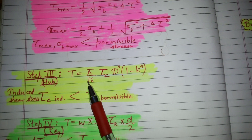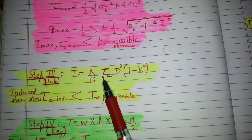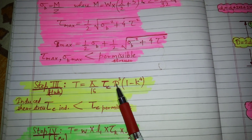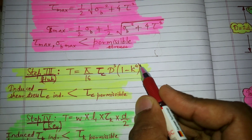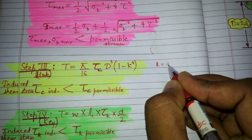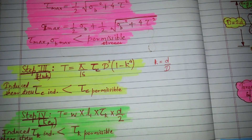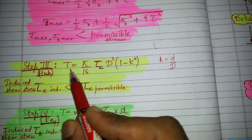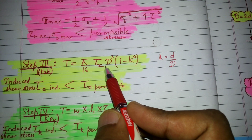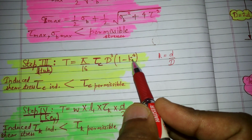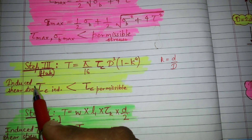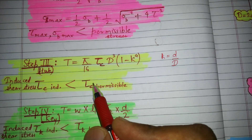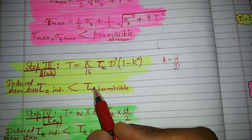For the hub stresses, torque equals pi by 16 into induced shear stress into D cube into (1 minus k to the power 4), where k equals small d divided by capital D. Here it is written C because the hub is made of cast iron. The induced shear stress must be less than the permissible shear stress for cast iron.